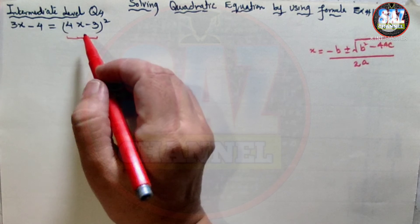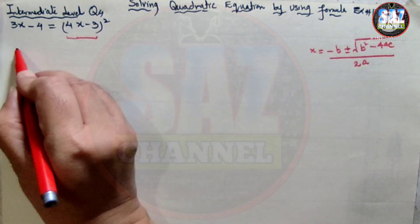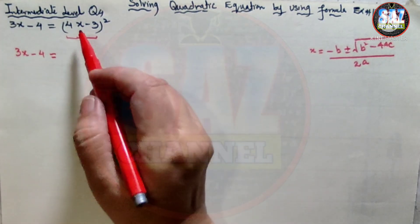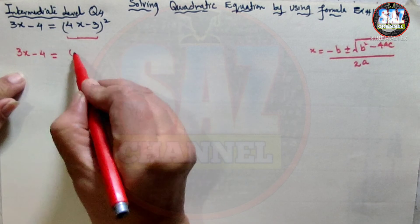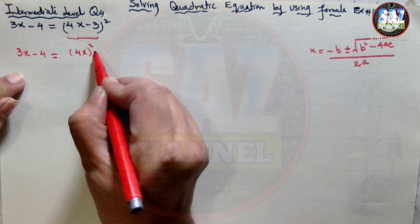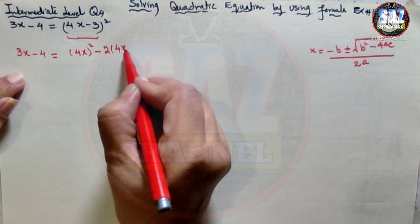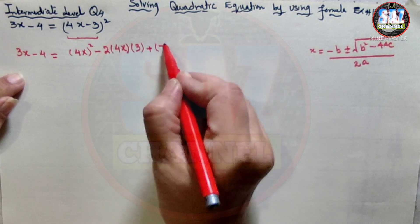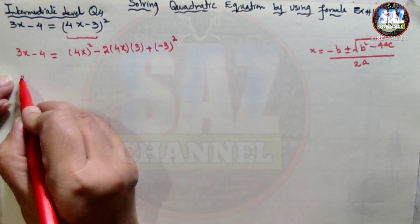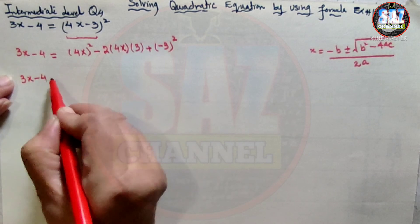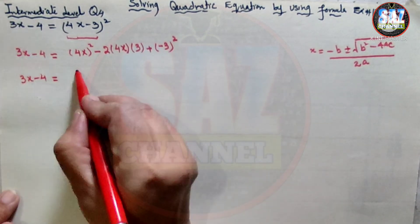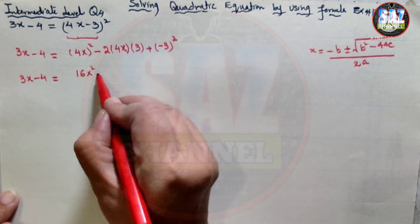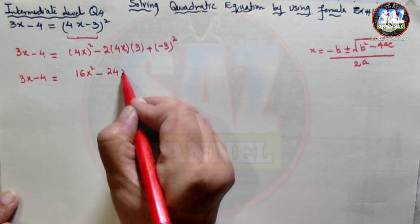We apply the perfect square identity. The expression (4x minus 3) squared takes the form (a minus b) squared, which equals a squared minus 2ab plus b squared. So it becomes: 3x minus 4 equals 16x squared minus 24x plus 9.